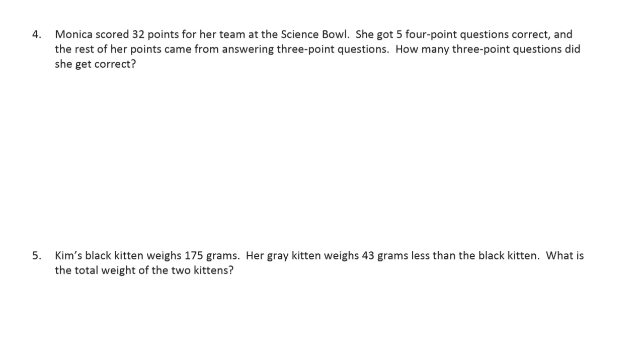Alanica scored 32 points for her team at the science bowl. She got five 4 point questions correct. The rest of her points came from answering 3 point questions. How many 3 point questions did she get correct? So we have a total of 32 points. Let's draw the tape diagram. And I'm just going to draw this. I'm not even going to think about it, really. I'm just going to kind of draw what it says I have. She scored 32 points. So this whole thing is going to be 32 points. She got five four-point questions correct. So that's four, four, four, four, four. There's five fours.